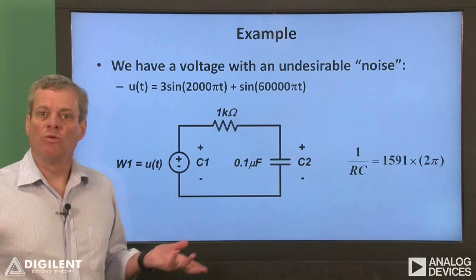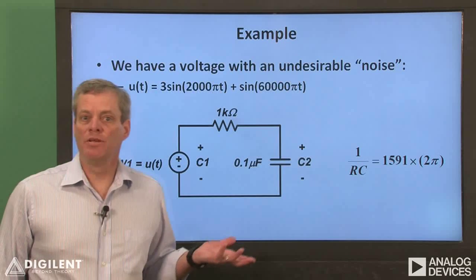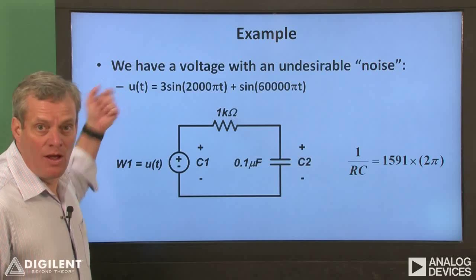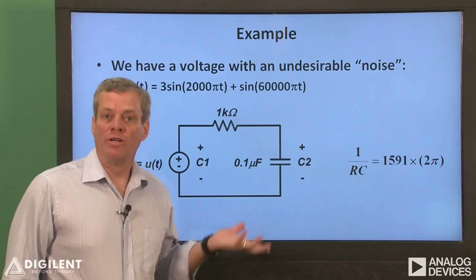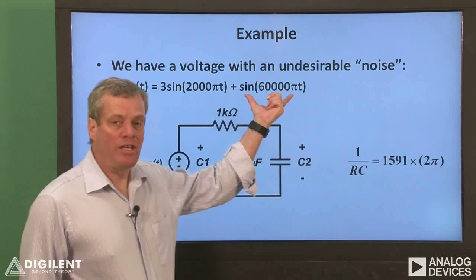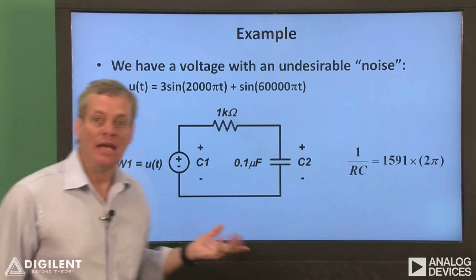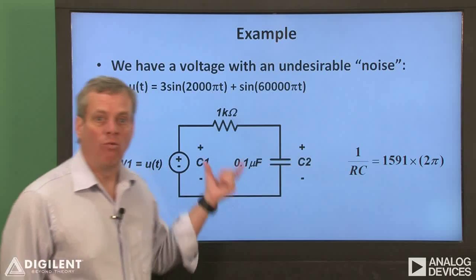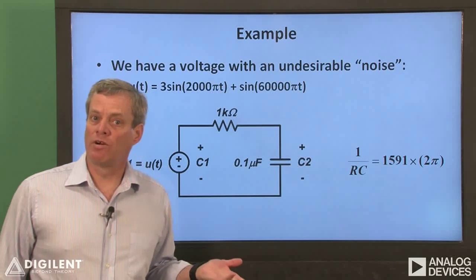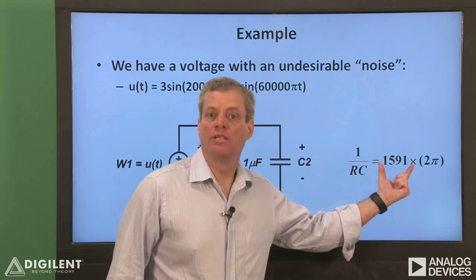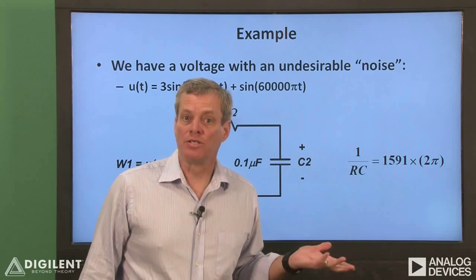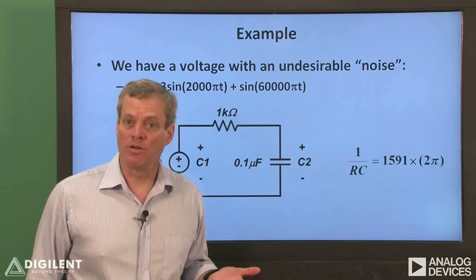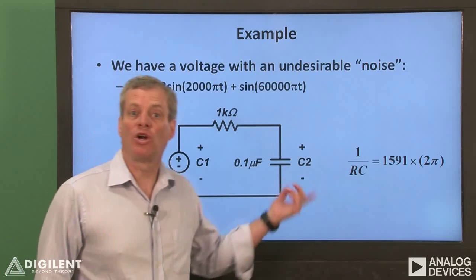For our example of an implemented circuit, we need to define a few things. Our noisy signal is going to be applied by the Analog Discovery waveform generator. The signal we'll use has a 1 kHz component as our original sinusoid and a 30 kHz sinusoid representing our noise. I'm using a 0.1 microfarad capacitor and a 1 kilohm resistor. This combination makes 1 over RC equal to 1,591 times 2-pi, or 1,591 hertz. Note that we need to work in radians per second when calculating the circuit's cutoff frequency — trying to make 1 over RC a number in hertz is a common mistake.